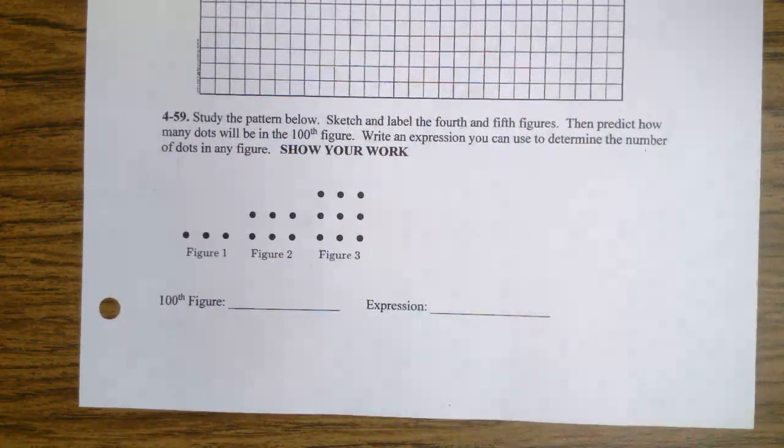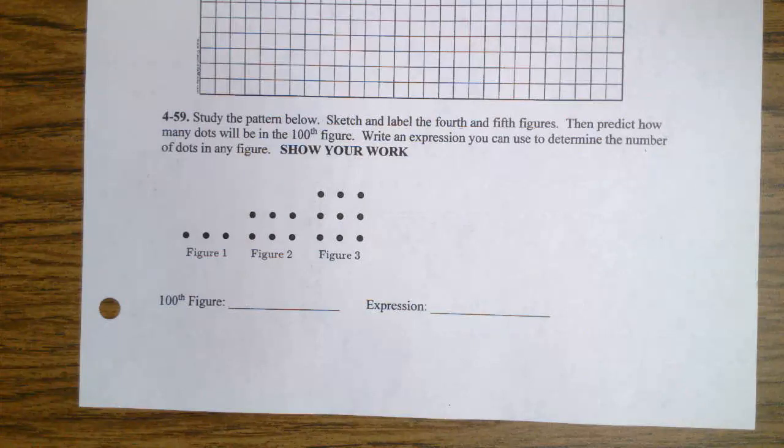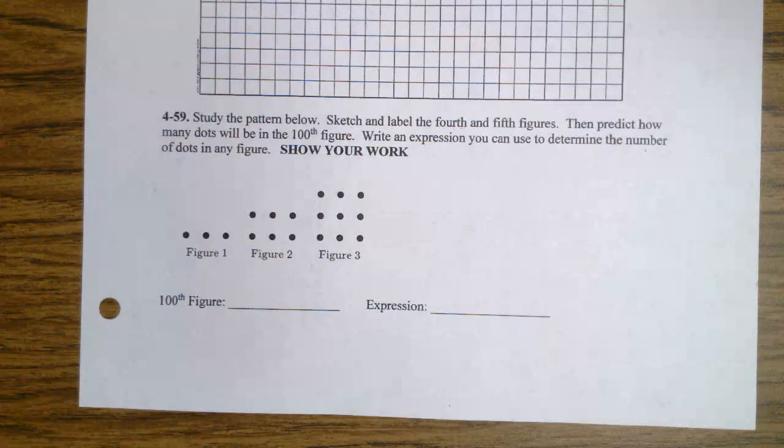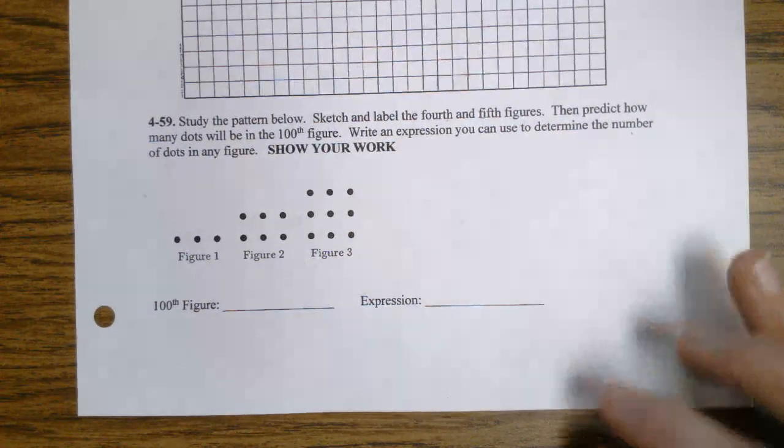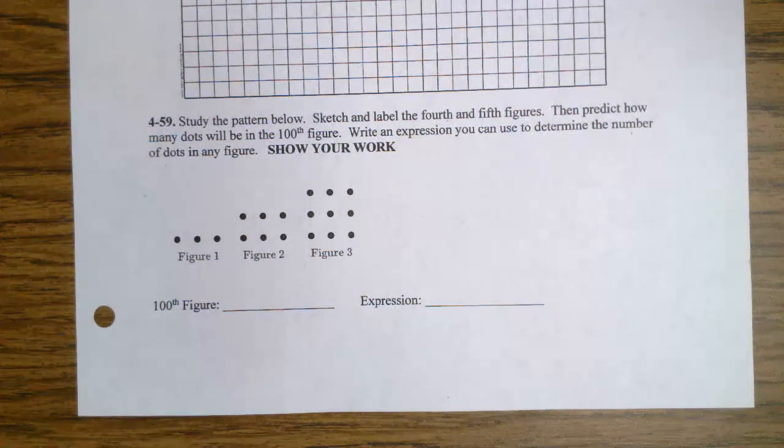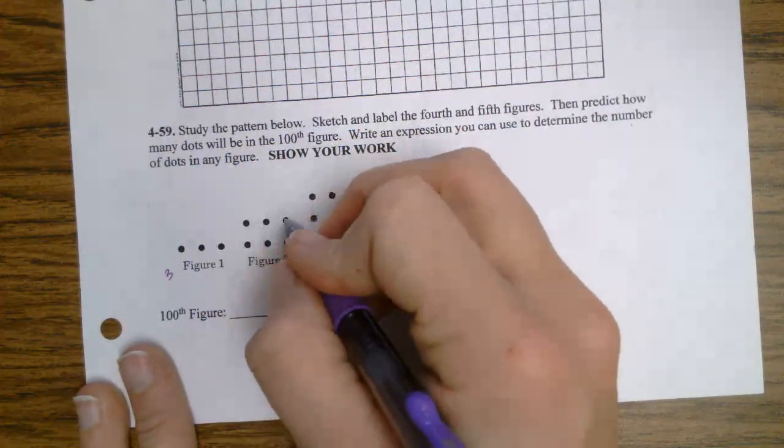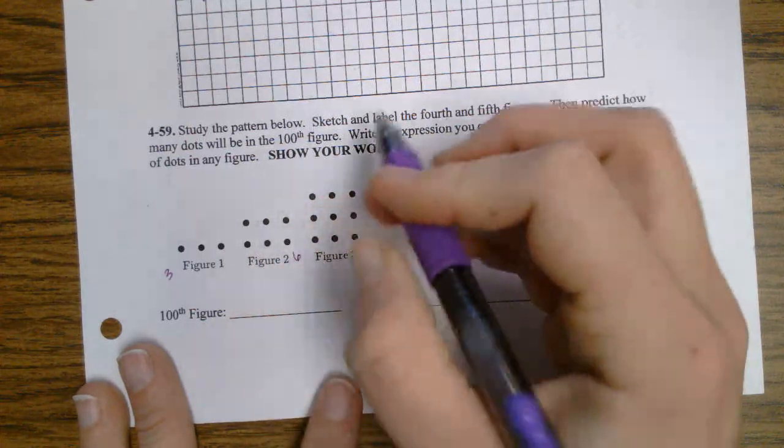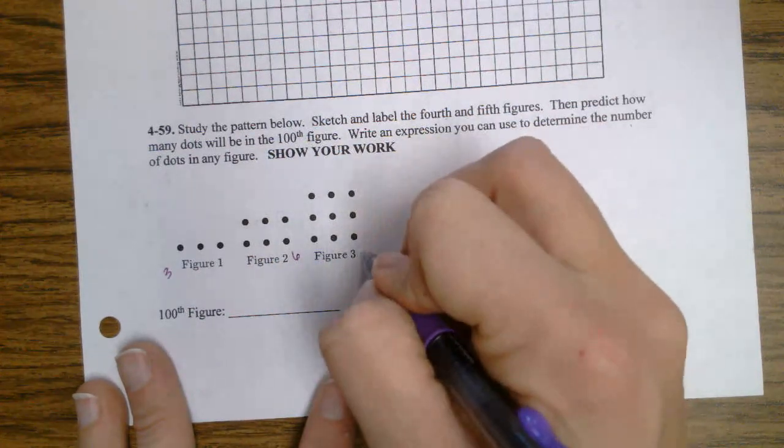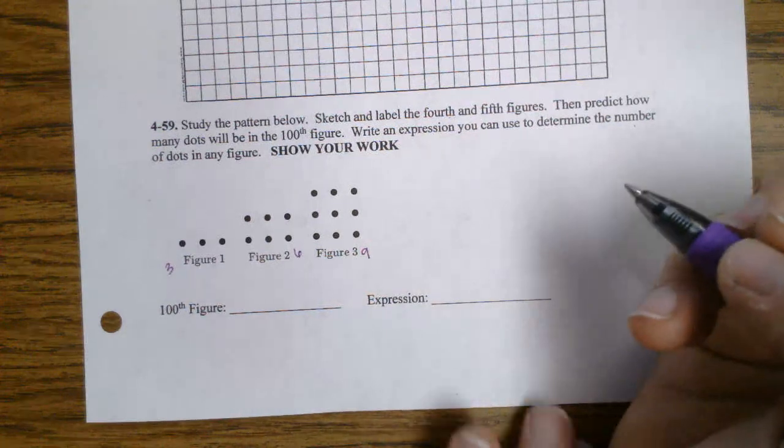Problem 59. Study the pattern below. Sketch and label the fourth and fifth figures. Then predict how many dots will be in the 100th figure. Write an expression you can use to determine the number of dots in any figure. Show your work. So figure 1 has 3 dots. Figure 2, 1, 2, 3, 4, 5, 6. Figure 3 has 9. It's growing by 3.